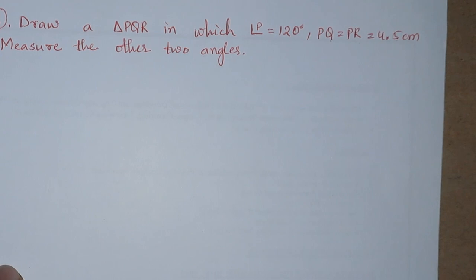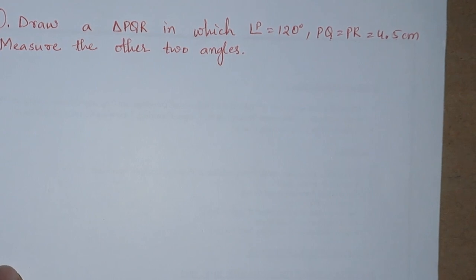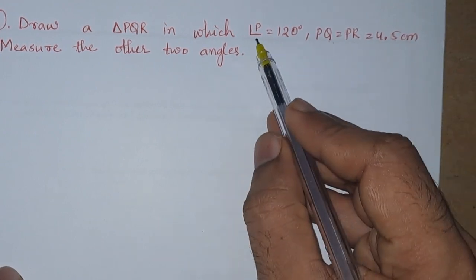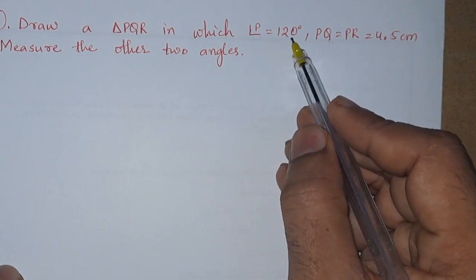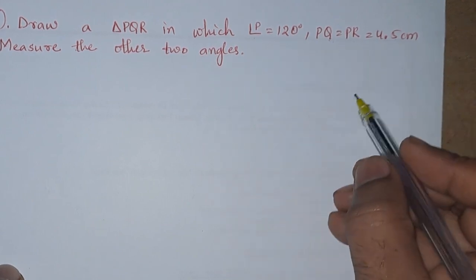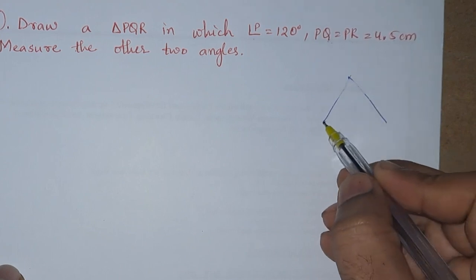Both are equal. If two sides are equal, then that means it is an isosceles triangle. And one of the angles is also given, that is 120 degrees. So let us draw a rough diagram.